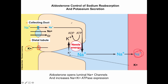The way aldosterone exerts its effect is twofold: it helps to open up sodium channels on the luminal membrane, and most importantly, aldosterone increases the expression of ATPase pumps on the basolateral membrane. This means aldosterone acts on the distal tubule and collecting duct, causing the cells to make more ATP pumps, resulting in more sodium reabsorption and more potassium secretion.